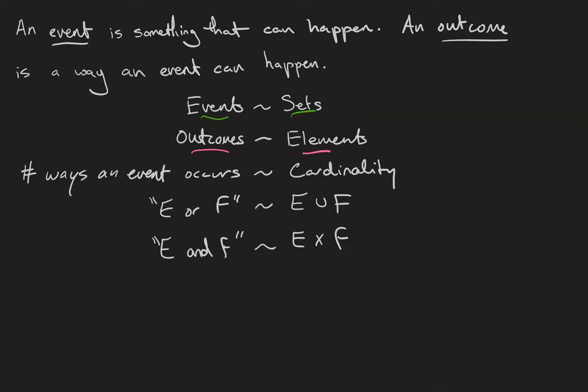What that's going to give us is that the number of ways that an event can occur is going to be the cardinality of that set. An event whose form is E or F is going to correspond to the set E union F, and a set whose form is E and F is going to correspond to the set E cross F. The idea behind that is we need something from E to happen and something from F to happen, so that's going to give us the pair which is a member of the Cartesian product.